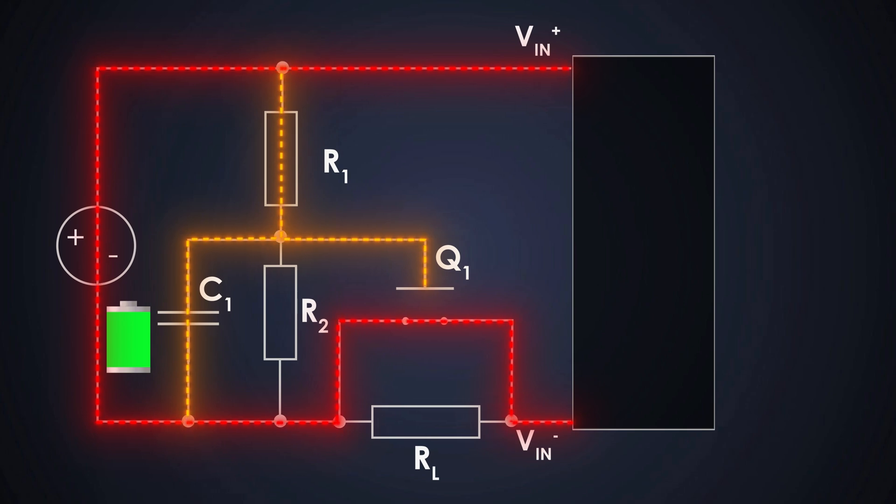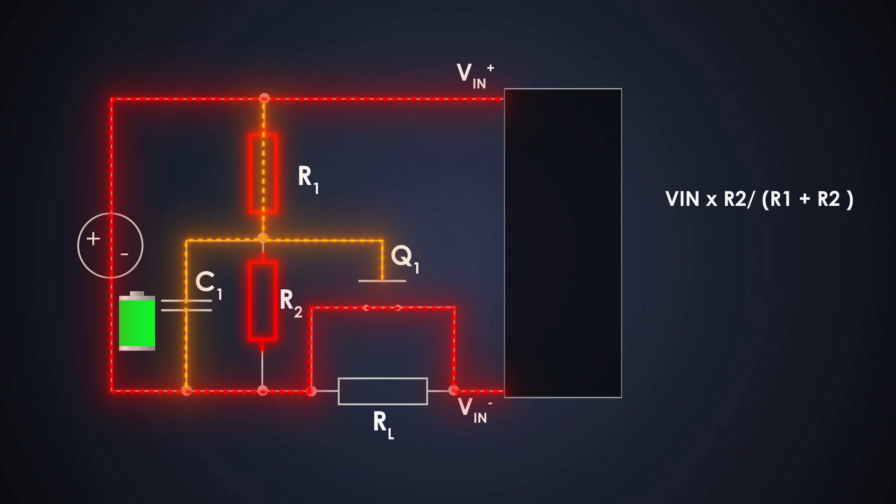So, the NMOS will have lowest resistance path for the load current, effectively shorting it out once inrush is over. The voltage that turns on Q1 is determined by the voltage divider formed by R1 and R2. The gate voltage of this MOSFET is approximately like this. Now, let's talk about the timing.